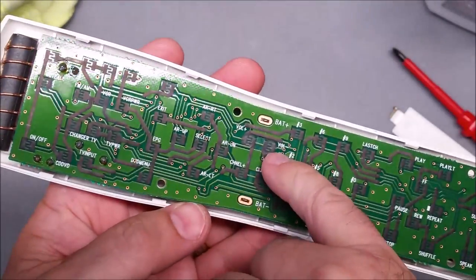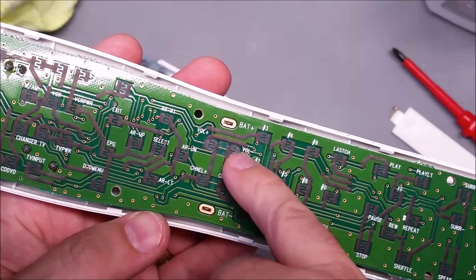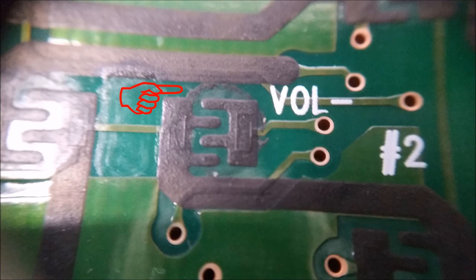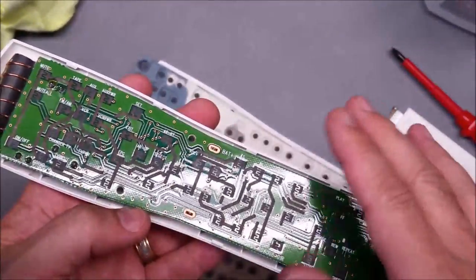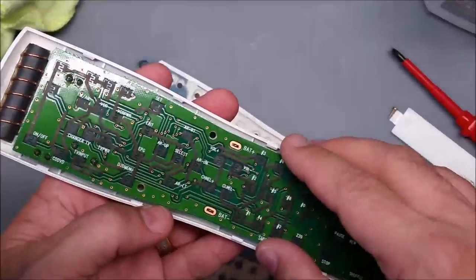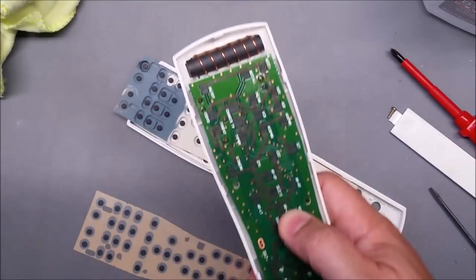You can actually see the conductive paint has built up on here and shorted out some buttons. That will take out all the buttons, a big chunk of buttons. It depends on which button gets shorted out, but basically the remote thinks you're holding a button down all the time.